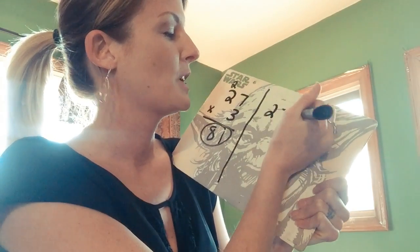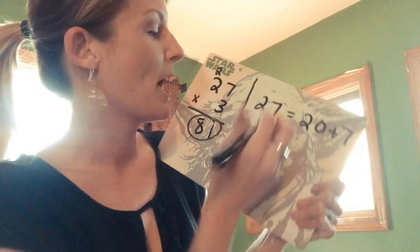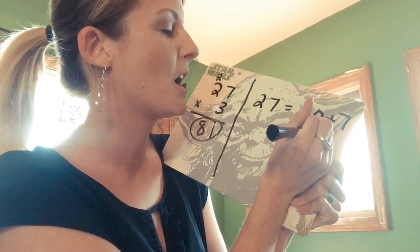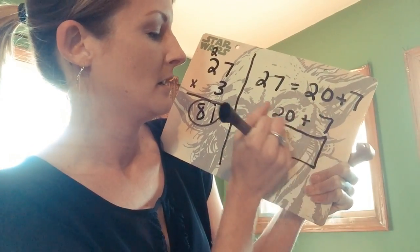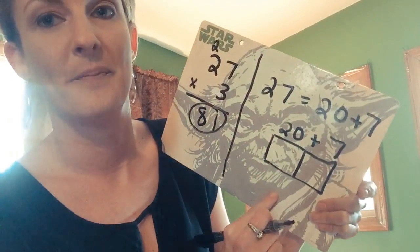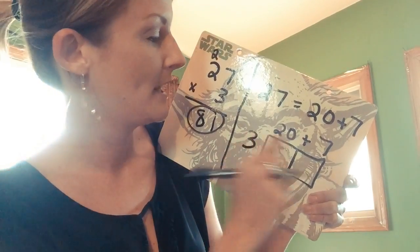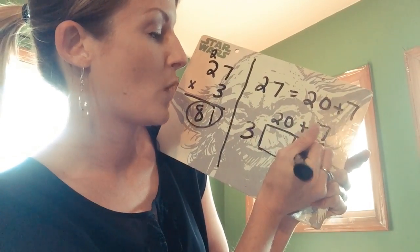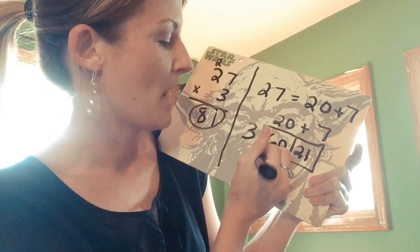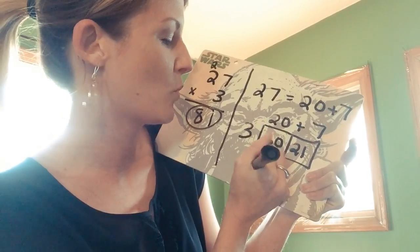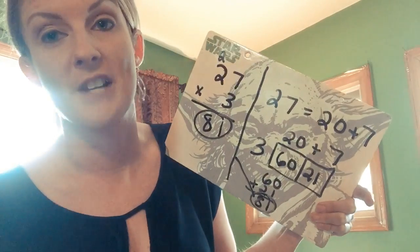So 27 equals 20 plus 7. We're going to go ahead and put that 20 plus 7 above two sets of boxes — 20 here, 7 here. Now we're going to bring that 3 over, and we know that 7 times 3 gives us 21 and 3 times 20 gives us 60. Now we're going to add those two up: 60 plus 21 gives us our 81, which is the same answer we got before.